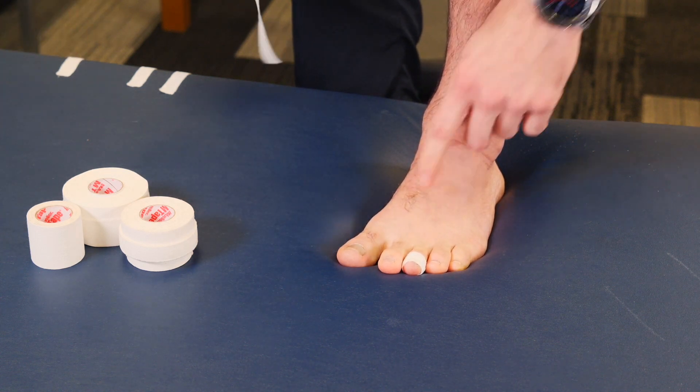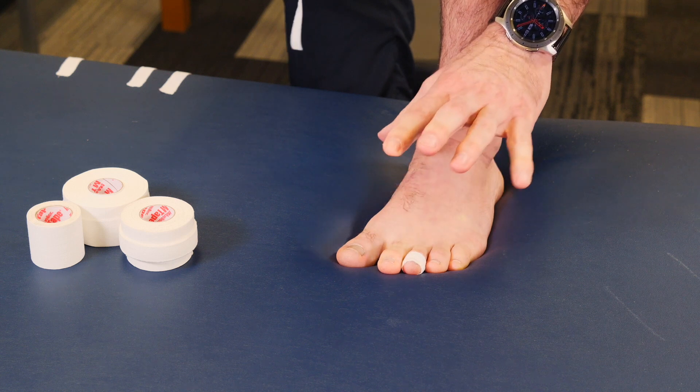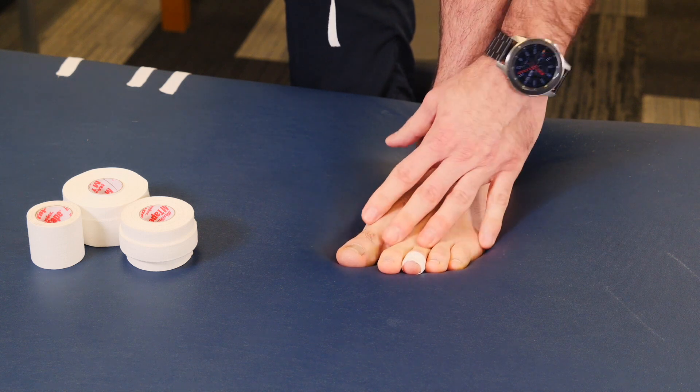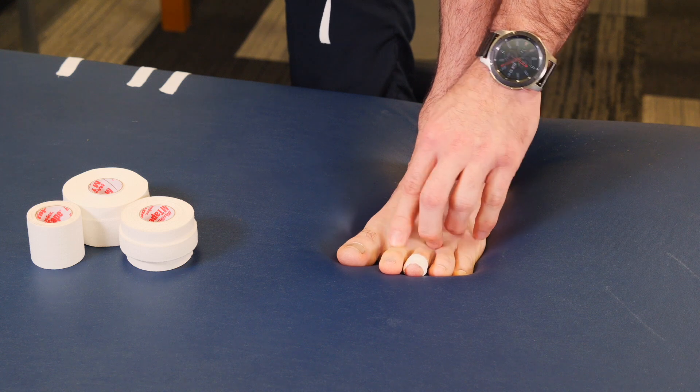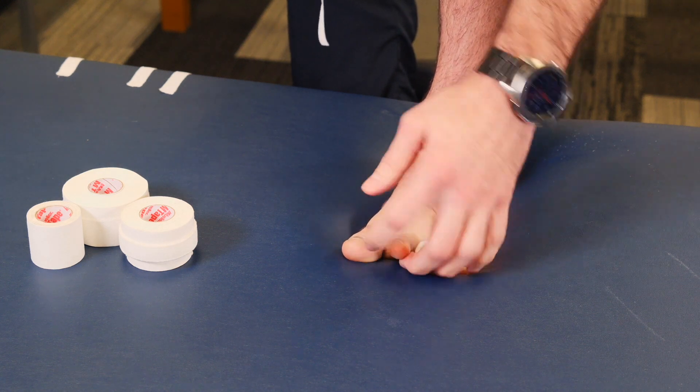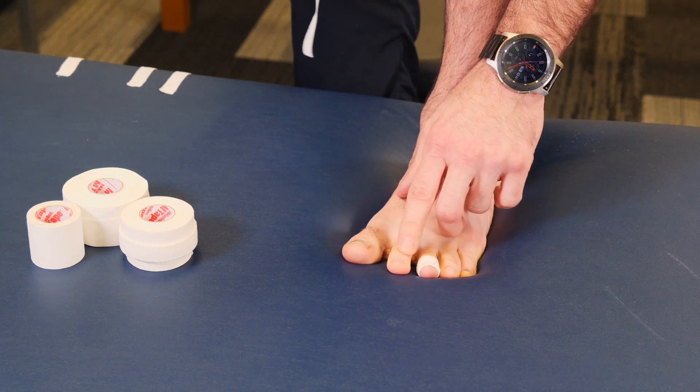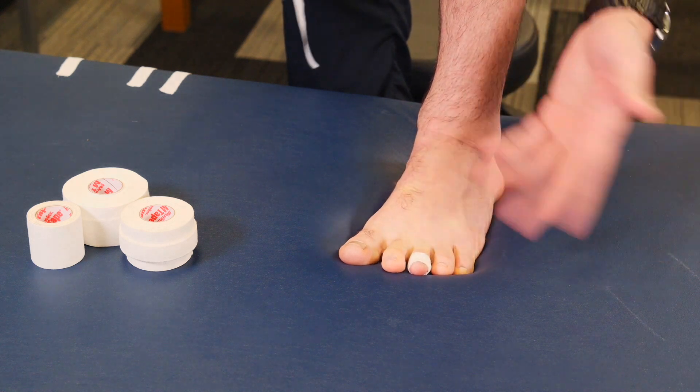Second is if you just sprain any one of these digits. The joints of the foot are very similar to the joints of the finger in that you have a joint here and a joint here and muscles that pass underneath and alongside. If you injure these, the best way to train with this is actually to buddy tape them up.